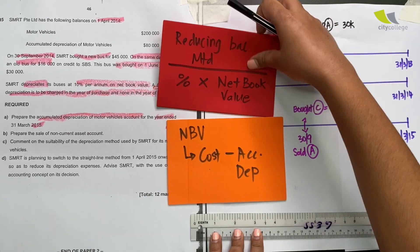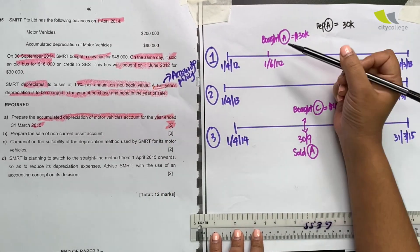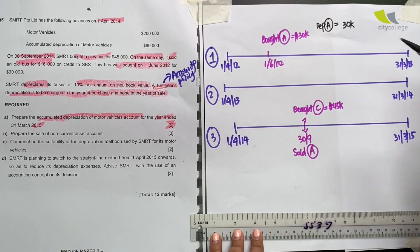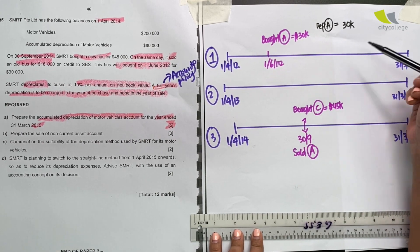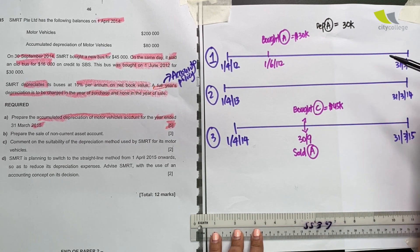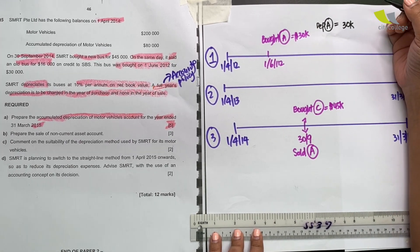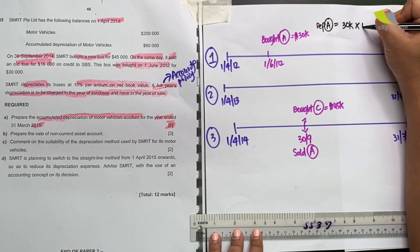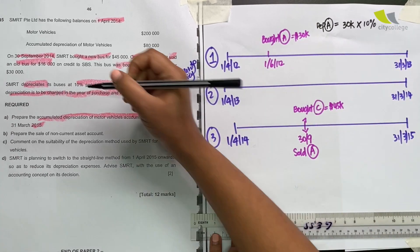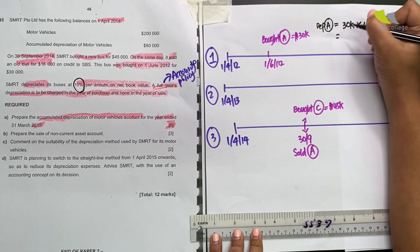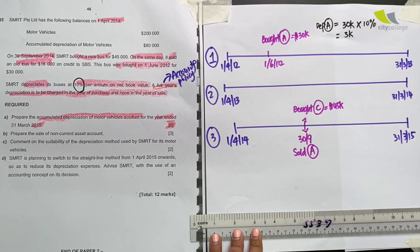Do I have an accumulated depreciation for this asset that I just bought? I don't. It's a brand new asset that is only going to start losing value in this year. So there's no old loss to minus off. So if there isn't, I will straight away multiply by the percentage given to me in the question. So that means the depreciation for A in the first year is $3,000.